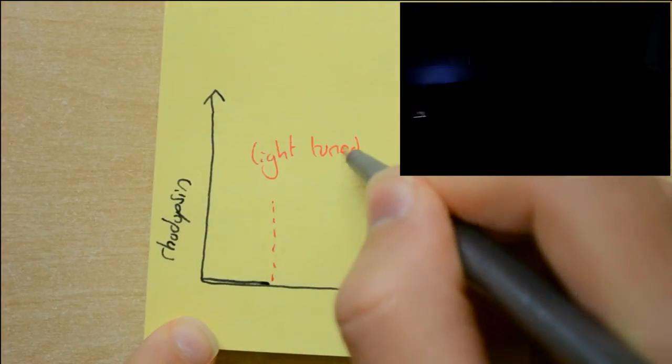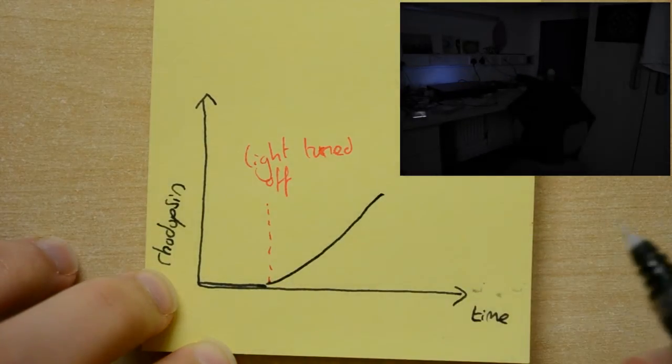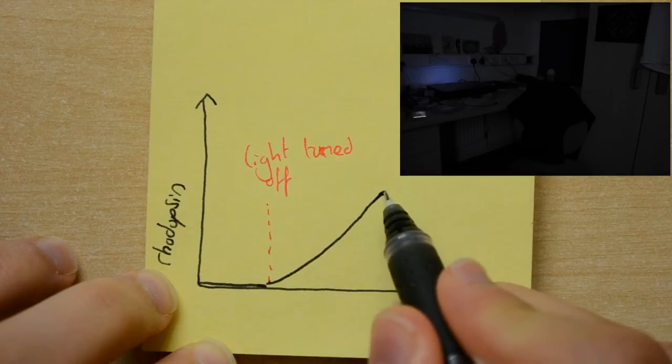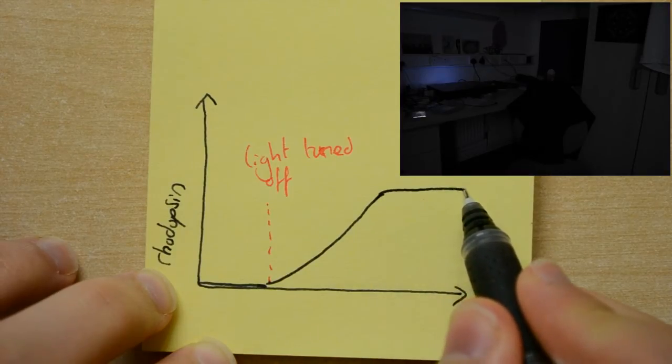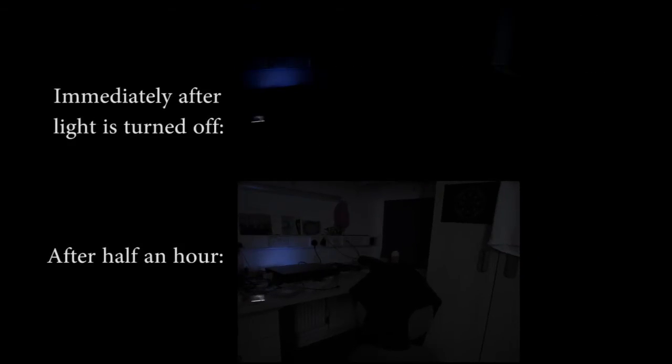Then, if we turn the light off, we begin to form rhodopsin at a rate quicker than we use it up, as the levels begin to increase. And after about half an hour, a new equilibrium is reached, however this time with much higher levels of rhodopsin. This means the much more sensitive rods are able to work, and this gives us better night vision.